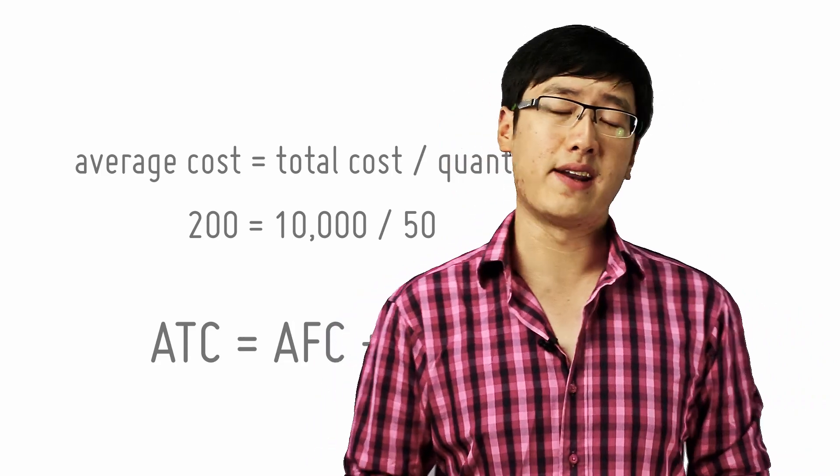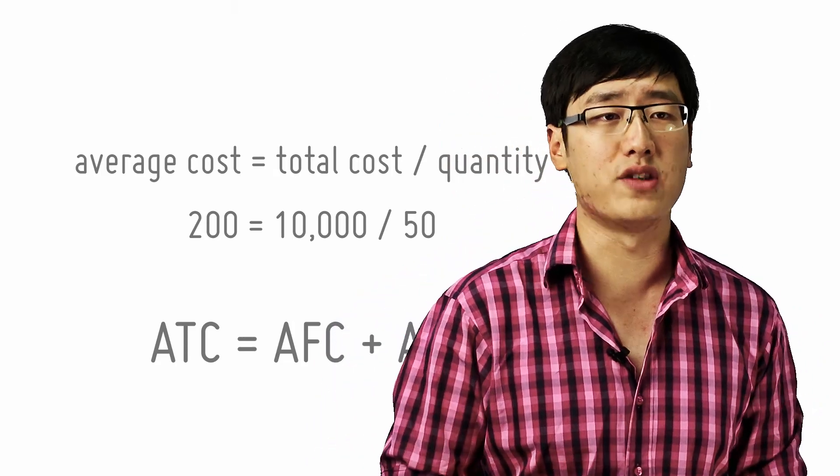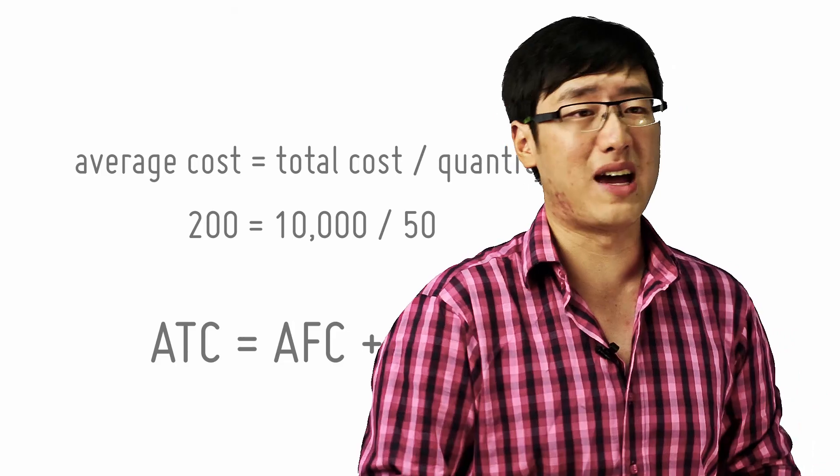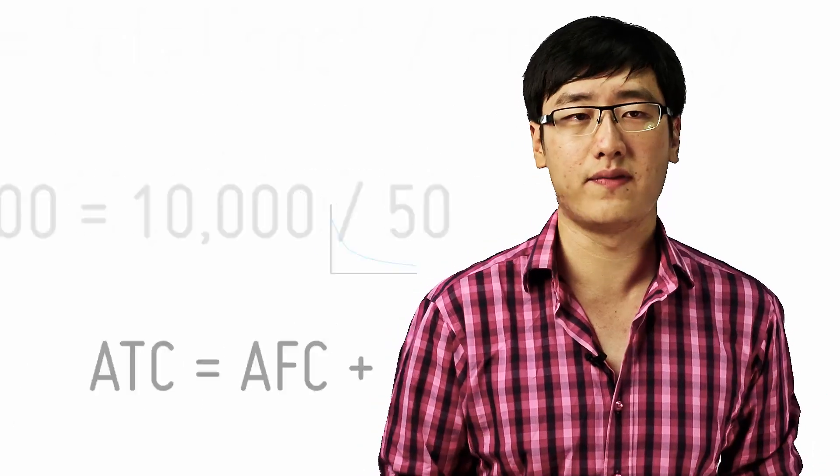So just like the total cost, the average cost can be divided into average fixed cost and average variable cost. And average cost equals average fixed cost plus average variable cost. Very simple.